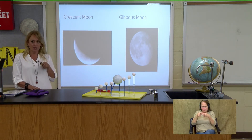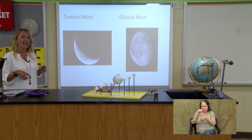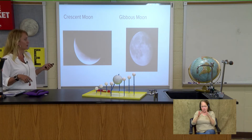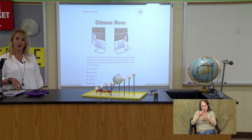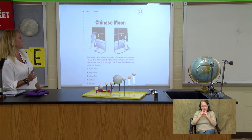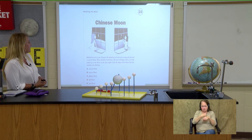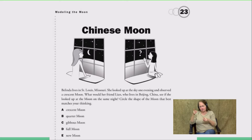I want to pose a scenario with you. I did this as bell work with my students this week on Google Classroom and then compiled their data so we'll be able to talk about some of their answers. I thought it might be interesting for you to know what students your age right here in your district responded to this question. The scenario is called 'Chinese Moon.' It says: Belinda lives in St. Louis, Missouri. She looked up at the sky one evening and observed a crescent moon. What if her friend Lin, who lives in Beijing, China, looked up at the moon on the same night?